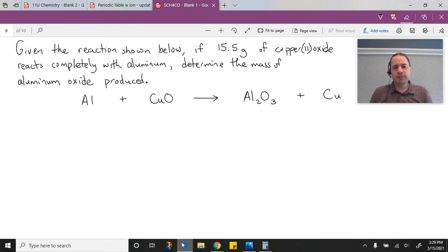Given the reaction shown below, if 15.5 grams of copper 2 oxide reacts completely with aluminum, determine the mass of aluminum oxide produced.